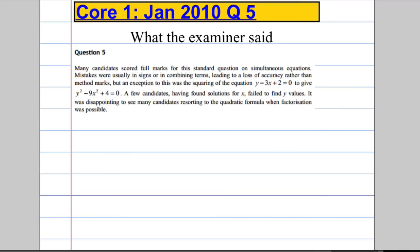But let's have a look at what the examiner said. Many candidates scored full marks. Standard question on simultaneous equations. So it tends to come up quite a bit. Mistakes usually in signs or combining terms. So watch out for that. Don't be making those mistakes with your signs and your combining terms. It seems to be happening quite a bit. And that loses accuracy marks. Exception was squaring this out to give this. So some people were taking an absolutely bizarre step to square this out to get that. And a few people who found the solutions for x failed to find the y value. So remember, simultaneously, you're going to need x's and y's.